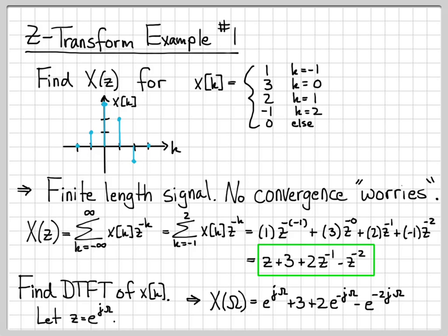So those are the only points that aren't contained in the region of convergence. So the region of convergence does contain the set of points on the unit circle. So we're free to plug into X of Z. And once we plug into X of Z, e to the j omega, that gives us the DTFT of our signal.